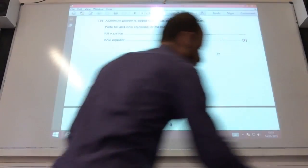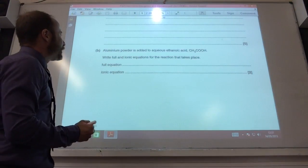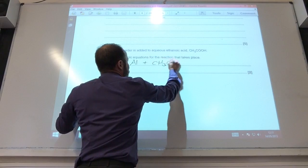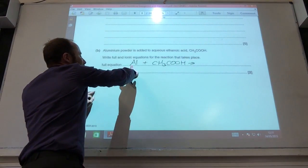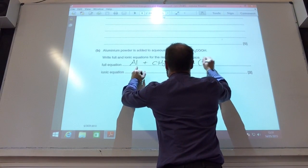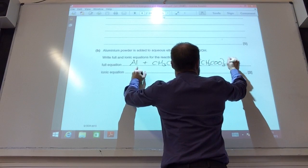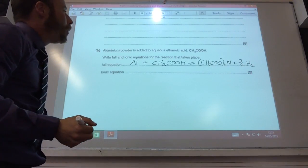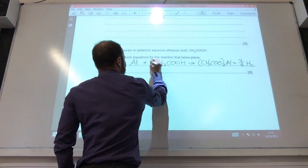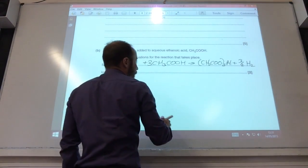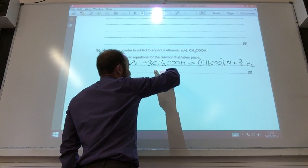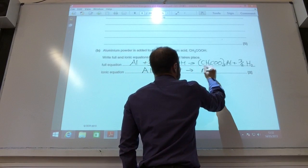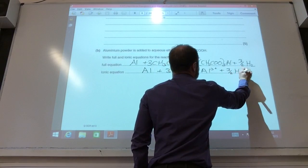Right, so I'm going to do some equations now. Aluminum powder is added to aqueous ethanoic acid. Write the full and the ionic equation. You've got to know your formulae for this one. Aluminum is a group 3, so it is going to form Al3+. That means that you are going to need 3 ethanoate for that. You are going to make 1 and a half H2's as well, and I need 3 of those to get to balance. Ionic equation: the ethanoate ion doesn't change, and therefore it becomes Al plus 3H+ goes to Al3+ plus 3 halves H2.